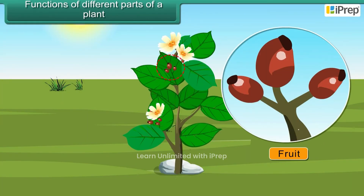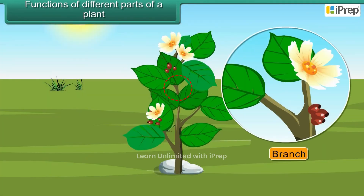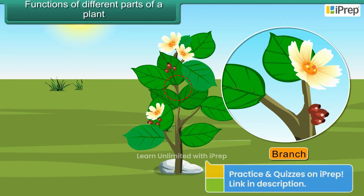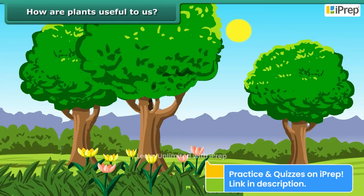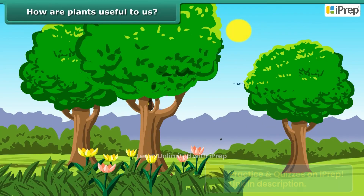The fruit disperses seeds and protects them. The branch supports the leaves, flowers, and fruits, and connects them with the roots.